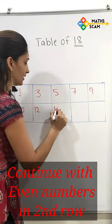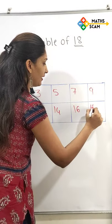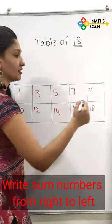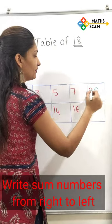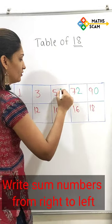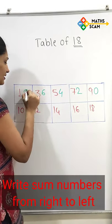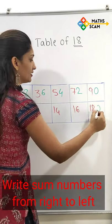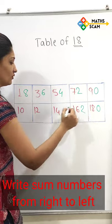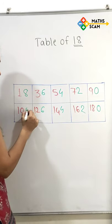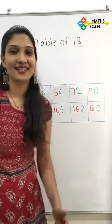14, 16, 18. Then write 0 to 8 from the right side: 2, 4, 6, 8, 0, 2, 4, 6, 8. This is our table of 18. Thank you.